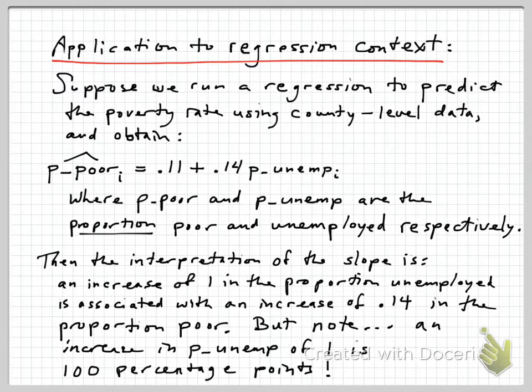Suppose you run a regression using county data, and you're going to try to predict the poverty rate using the local unemployment rate. And we might expect that poverty would go up and down as unemployment went up and down. And let's say you run that regression with the proportion poor, and that's from 0 to 1. The proportion poor in county i is equal to, when you run the regression, 0.11 plus 0.14 times the proportion unemployed.